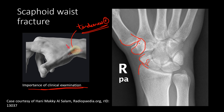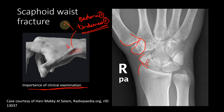If a patient had a fall on an outstretched hand and presents with pain, edema over the anatomical snuffbox, and tenderness on palpation in that region, there is a high chance the patient has a scaphoid waist fracture. This diagnosis is critical because a waist of scaphoid fracture can lead to a serious complication.